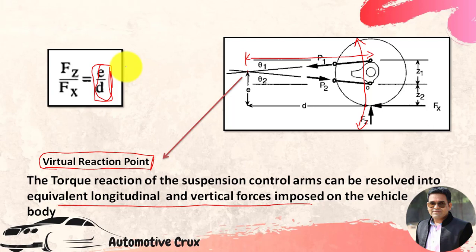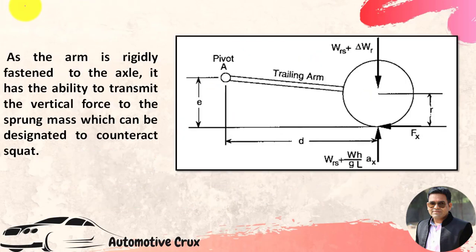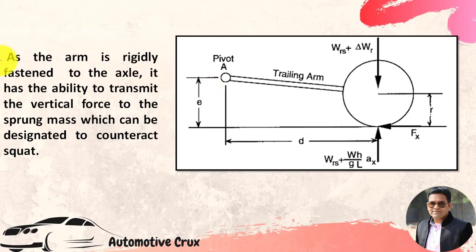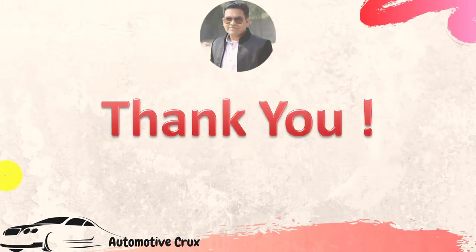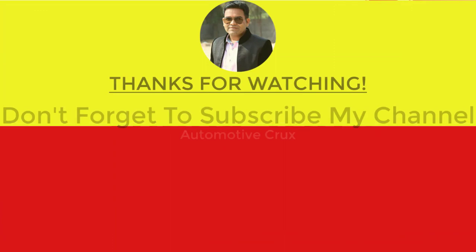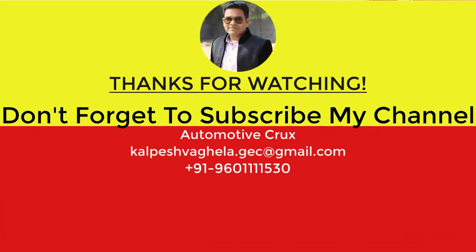In the next videos, you will get the whole idea about the effect of this ratio E by D. As I said, the trailing arm can be replaced using this E/D ratio and we can change the geometry to achieve anti-squat of the vehicle. As the arm is rigidly fastened to the axle, it has the ability to transmit vertical force to the sprung mass, which can be designated to counteract squat. Thank you guys for watching this video with attention. If you like this video, please do like and share with your friends, and don't forget to subscribe this channel.